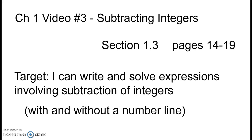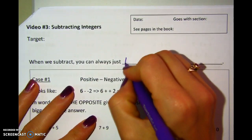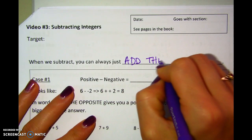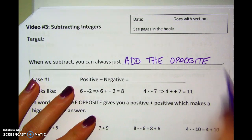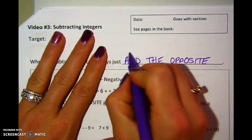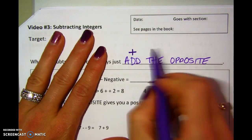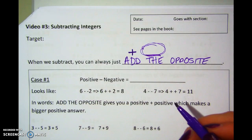Most of these notes we're going to do together in your packet, so I'm going to switch over to the camera. So you have the target and the box filled in. Let's start here with our notes. When we subtract integers, we can always just add the opposite. Instead of subtracting, we're going to change it to addition, and then whatever the second number is, we're going to add the opposite of what that was.